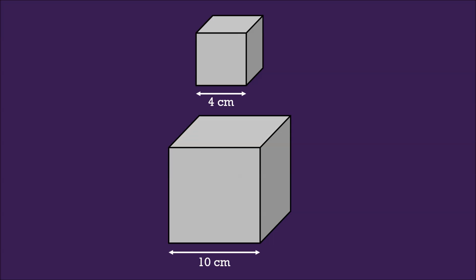Now what are their volumes? The volume of the smaller cube would be 64cm³, and the volume of the bigger cube would be 1000cm³.